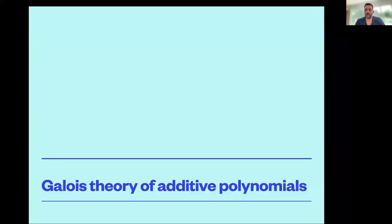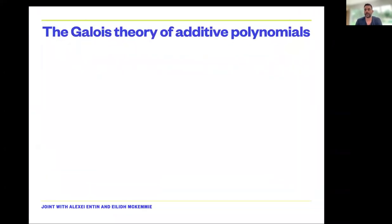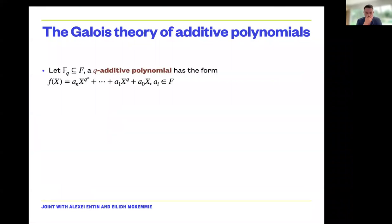What is an additive polynomial, or more generally a q-additive polynomial? A q-additive polynomial is a polynomial that has only terms of the form x to the q to the i. I assume that the base field where I choose coefficients contains the finite field Fq, and I only allow terms that are of degree a power of q.